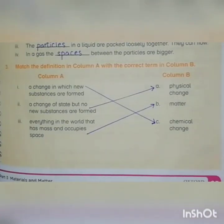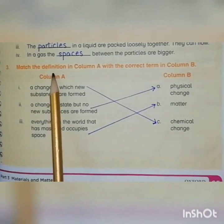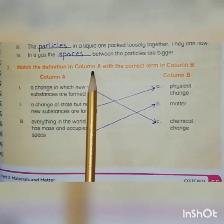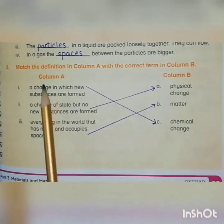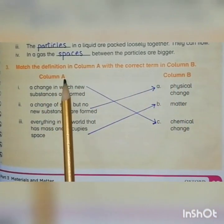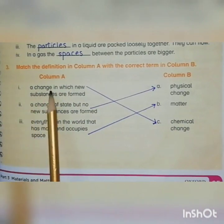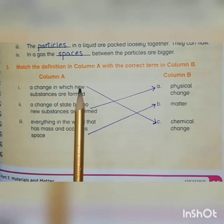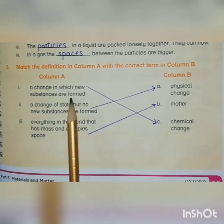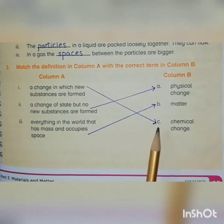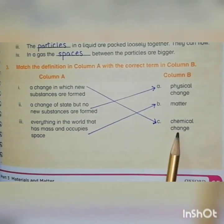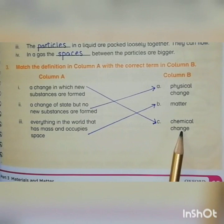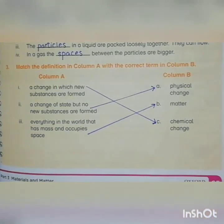Question number three: Match the definition in column A with the correct term in column B. First: A change in which new substances are formed. The answer is Option C, Chemical change, because during chemical changes a new substance is formed during a reaction.